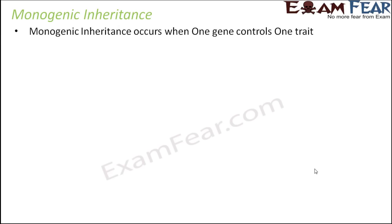Let's start with monogenic inheritance. So what is monogenic inheritance? Mono means one, so one gene controls one trait. Monogenic inheritance occurs when one gene controls one trait. This is basically the Mendelian inheritance — you remember the Mendel's experiments? So all those inheritance patterns, they are all monogenic inheritance.